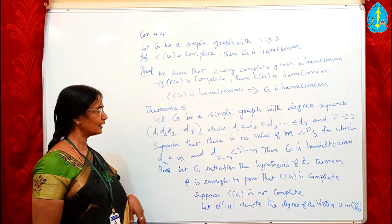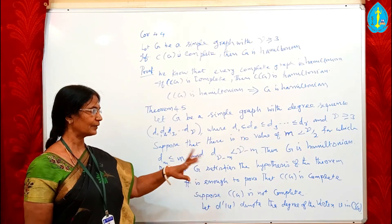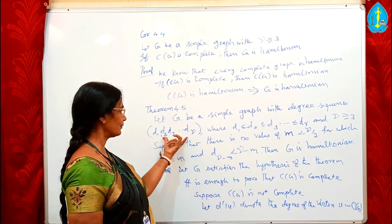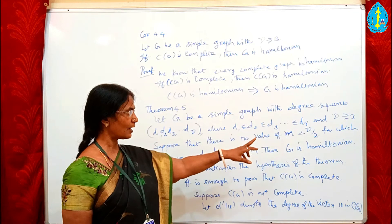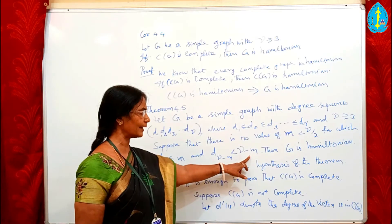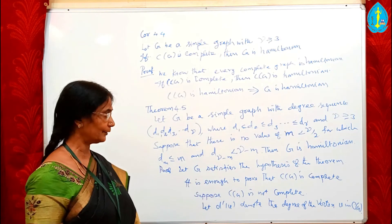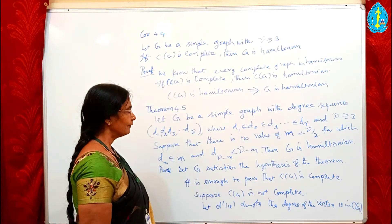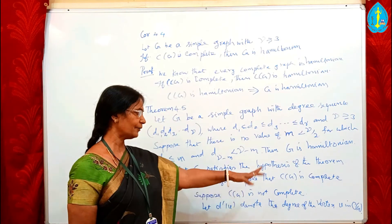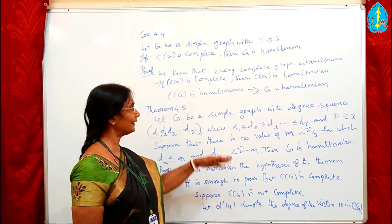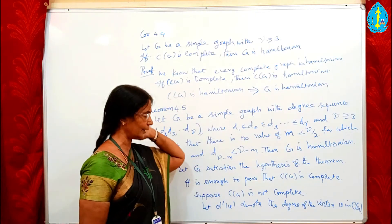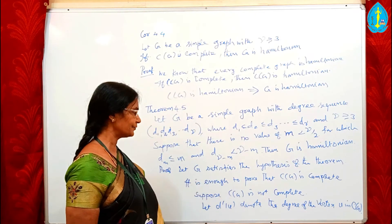The proof is given by contradiction. Let G satisfy the hypothesis of the theorem — that is, G is a simple graph with the given degree sequence, and suppose there is no value of M ≤ gamma/2 for which D_M ≤ M and D_{gamma−M} < gamma − M. We have to prove G is Hamiltonian. It is enough to prove that C(G) is complete, since C(G) complete implies C(G) is Hamiltonian, and C(G) Hamiltonian implies G is Hamiltonian.